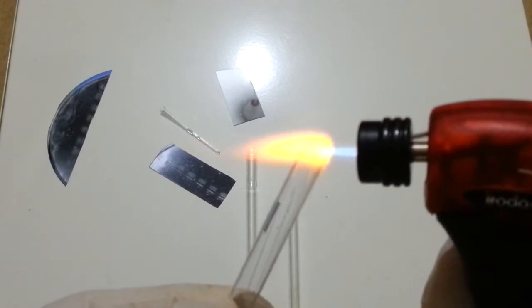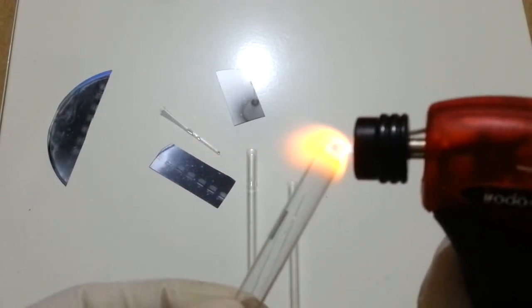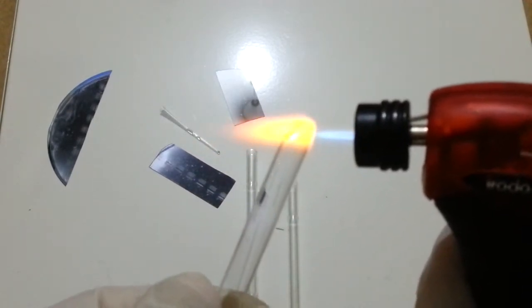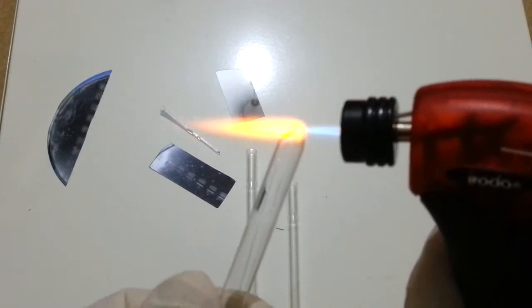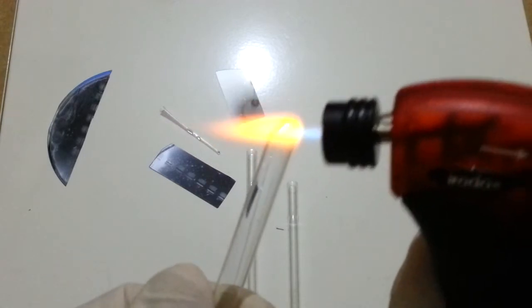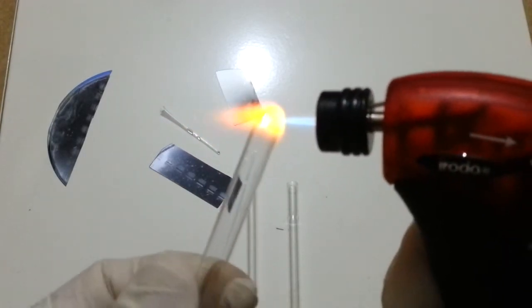The orange flame indicates that the glass is starting to melt. The orange color is due to the presence of sodium ions.